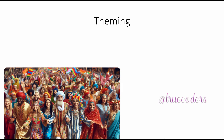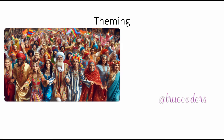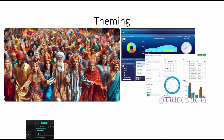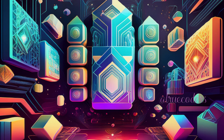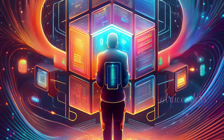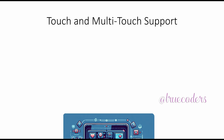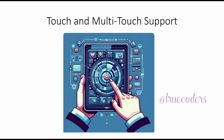Avalonia provides extensive theming and styling capabilities, allowing developers to create custom themes or modify existing ones. It supports dynamic theming, where the application's appearance can change at runtime, which is particularly useful for applications that offer light and dark modes.